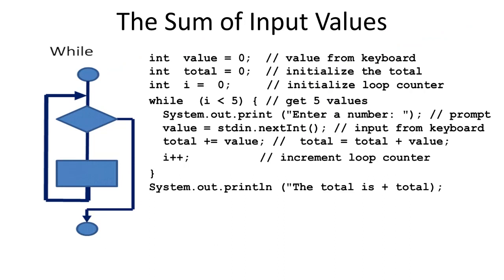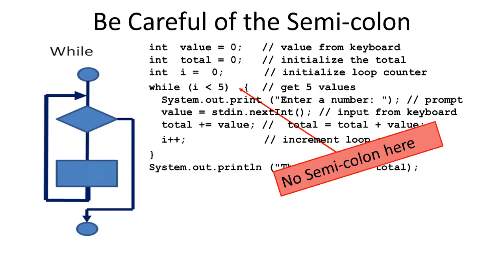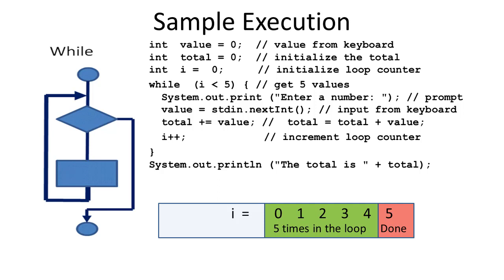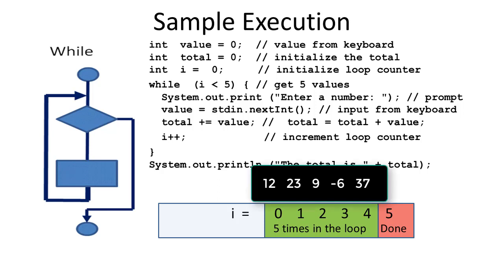This program fragment is similar to the ones already discussed. This time, five integers are going to be read from the keyboard and added to a total. When the loop ends, the total is displayed. It is very important to not put a semicolon character after the closing parenthesis of the test condition or even after the open curly brace. The body of the loop is executed five times. When i becomes a 5, we fall out of the loop and print the total. Suppose that the user entered the following numbers: 12, 23, 9, negative 6, 37. If these numbers were entered, the total would end up being 75.